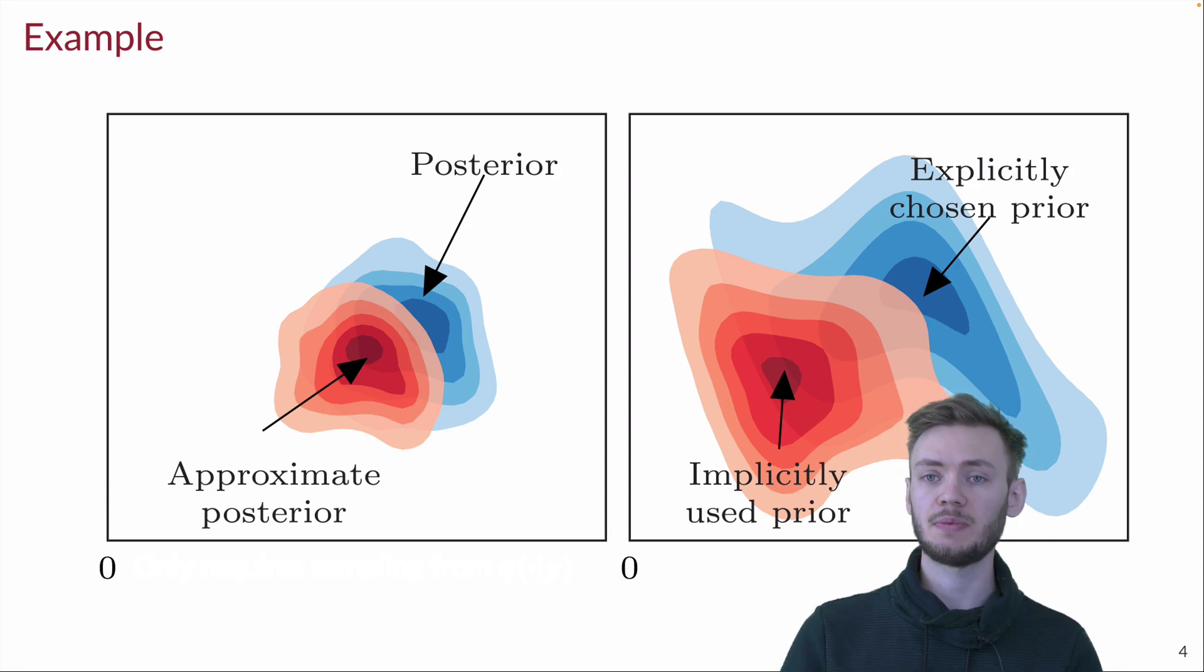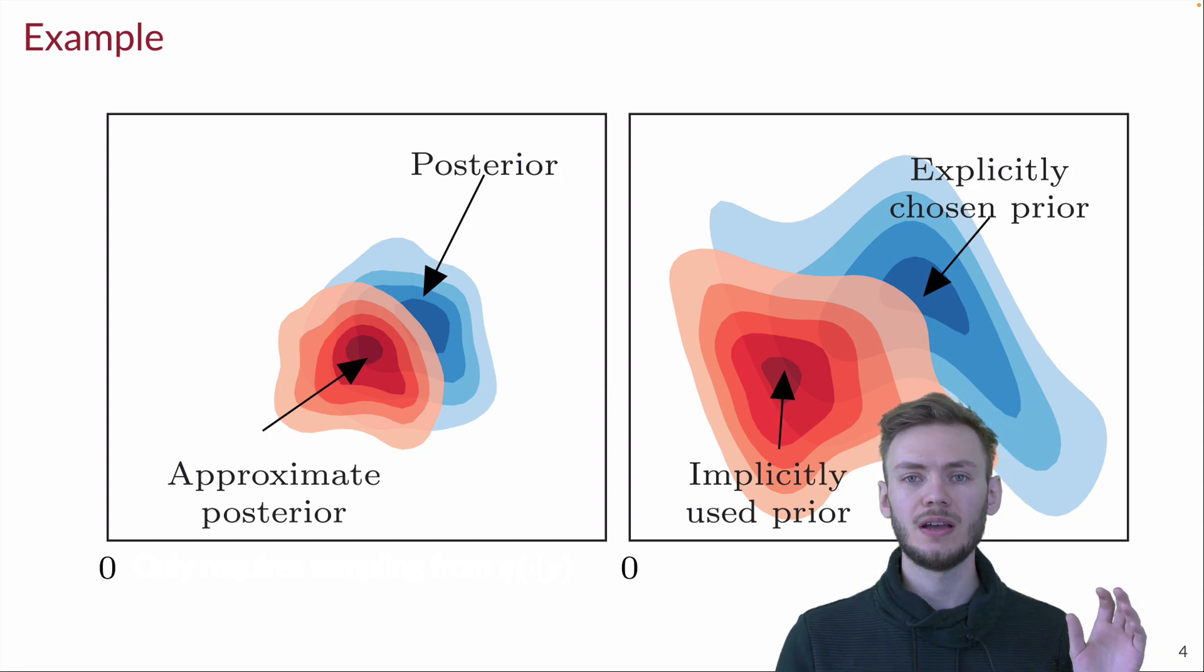There we have the explicitly chosen prior in blue, which corresponds to the unknown posterior. And now we also have the implicitly used prior, our Gibbs prior, in red, which corresponds to the approximation based on which we are actually doing inference.